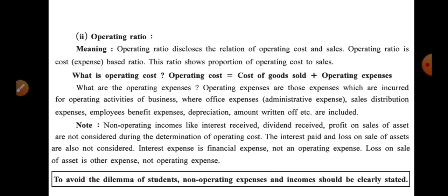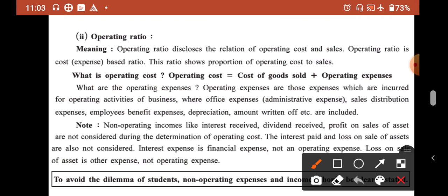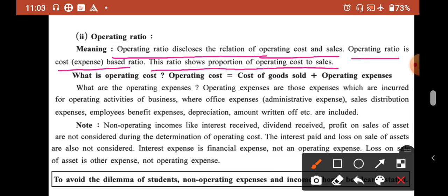What is the meaning of operating ratio? Operating ratio discloses the relation of operating cost and sales. Operating ratio is an expense-based ratio. This ratio shows the proportion of operating cost to the sales.